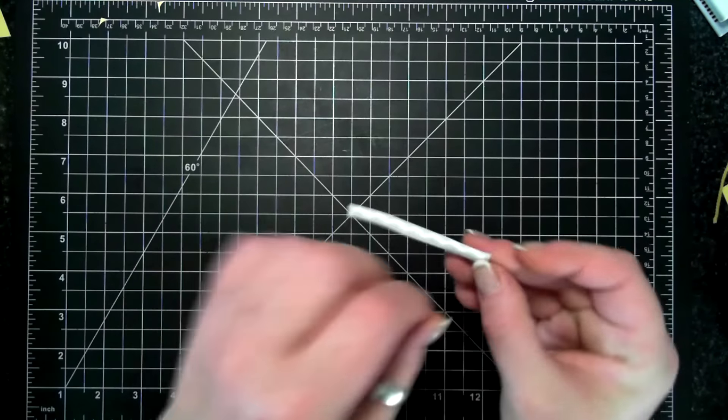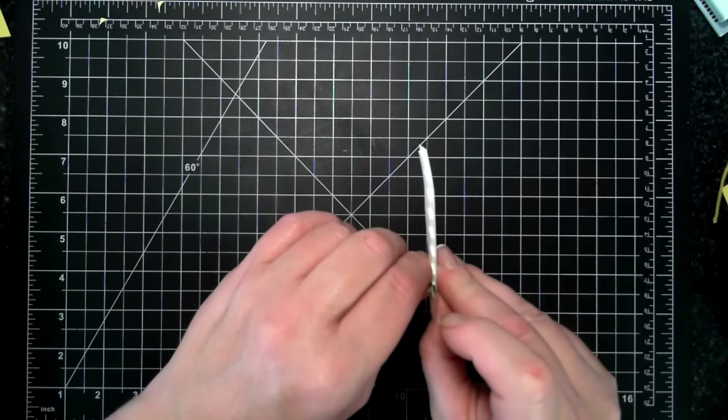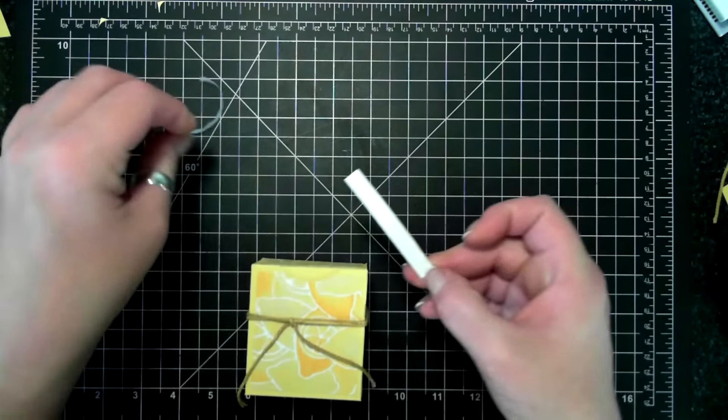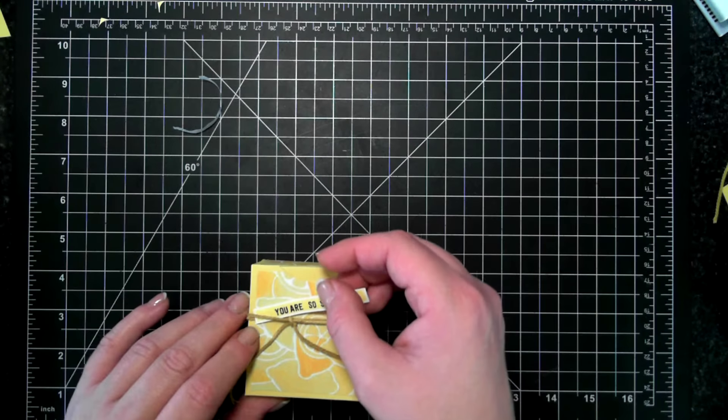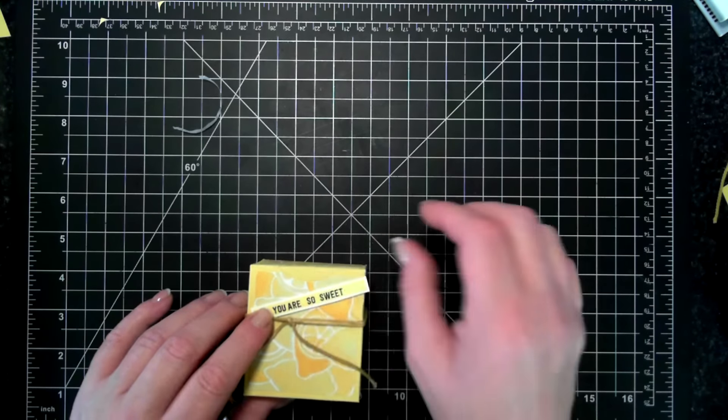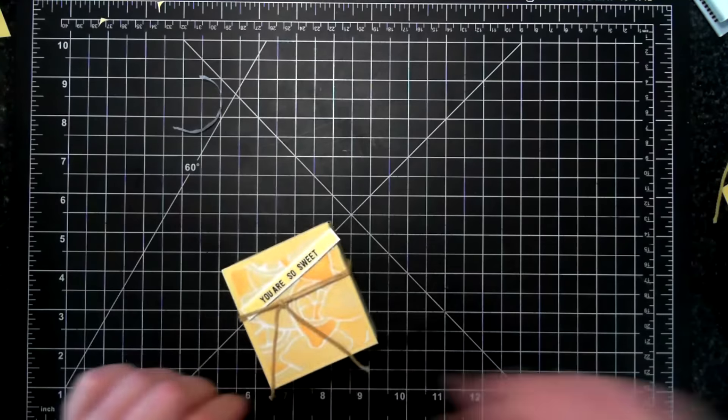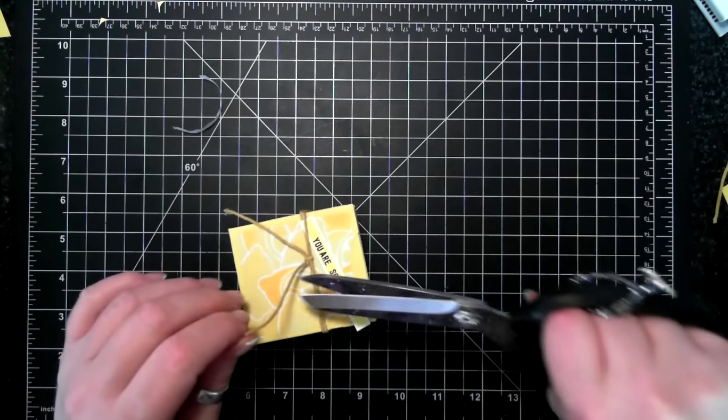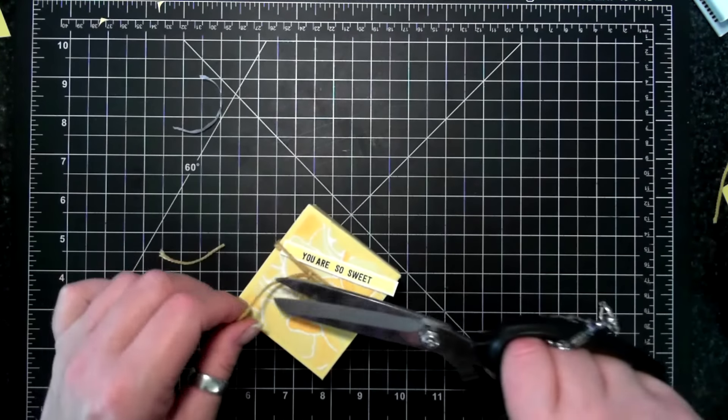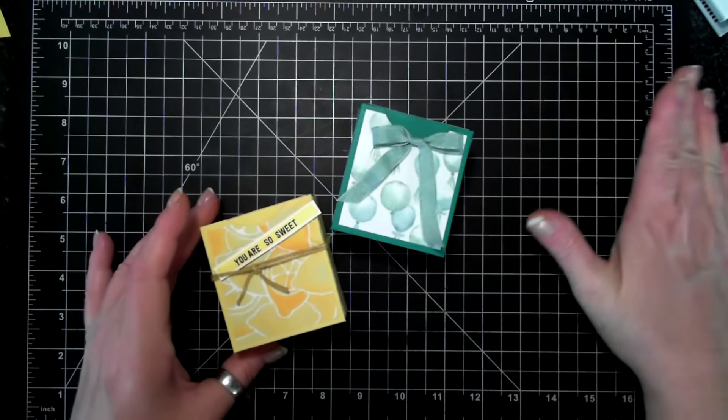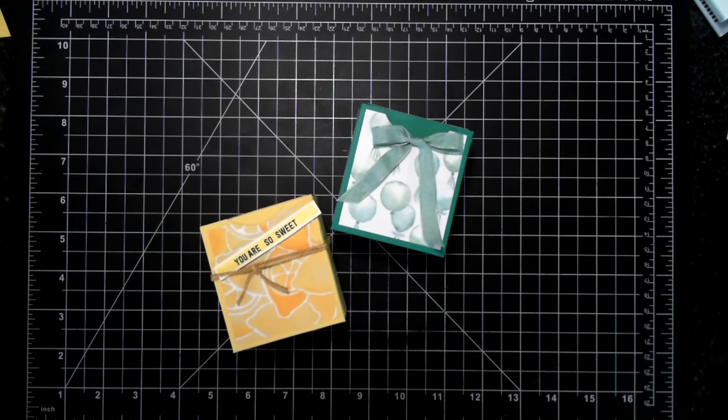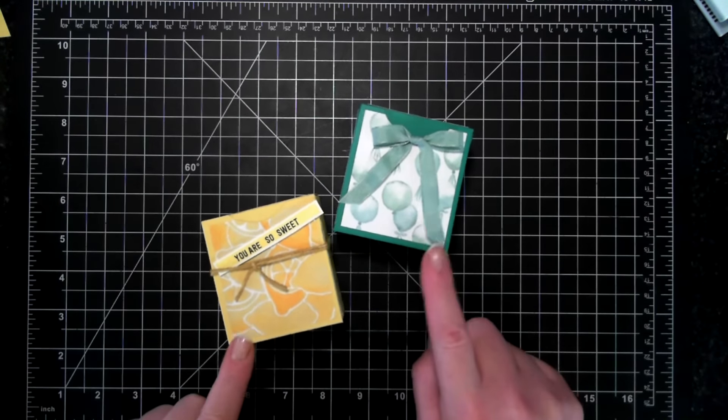Yeah, I like that. So just a little bit of dimensionals on the back. I cut off a little bit of that twine. There you go, two different looks, same box.